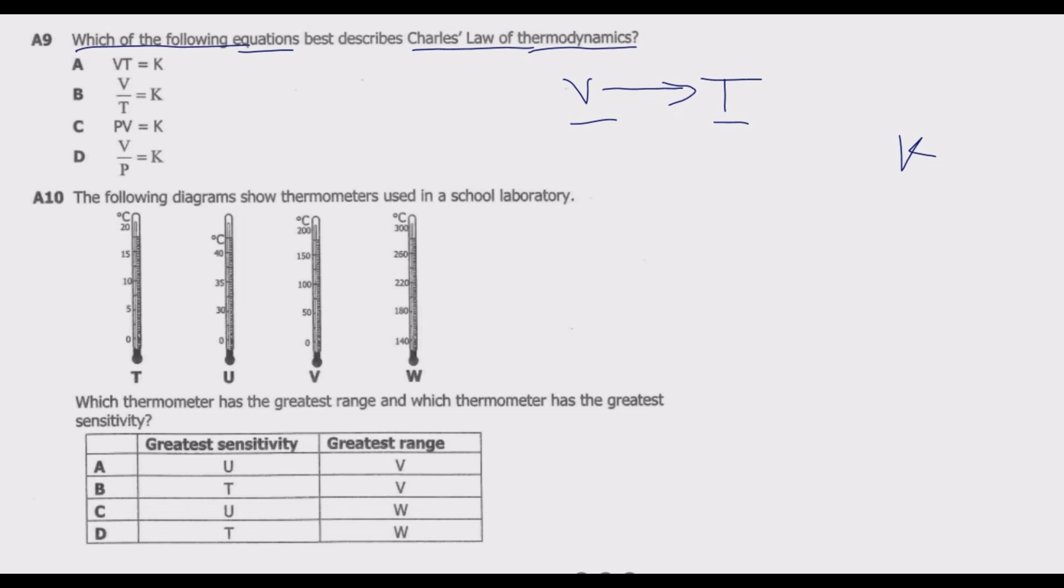Looking at the options, we need to eliminate anything that has more than volume and temperature. We notice that D does not have temperature but has pressure, and pressure is being kept constant, so D is out. C has pressure as the constant k, so C is also out. We remain with A and B which have volume, temperature, and the constant. Now if you look at A, V multiplied by T equals constant. If volume increases to maintain this constant k, T must reduce. This is an inverse relationship, not direct, so A is out.